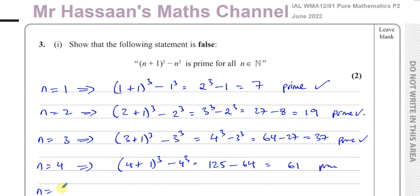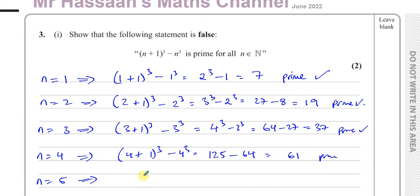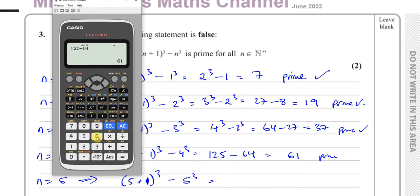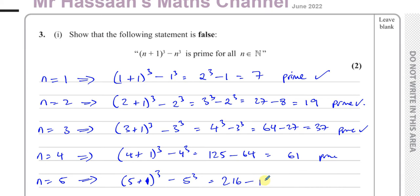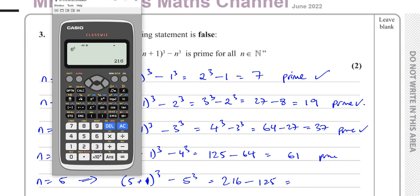So then we try n equals 5. When n equals 5, we have (5+1)³ minus 5³, that's 6³ minus 5³. 6 cubed is 216, minus 125, which gives us 91.